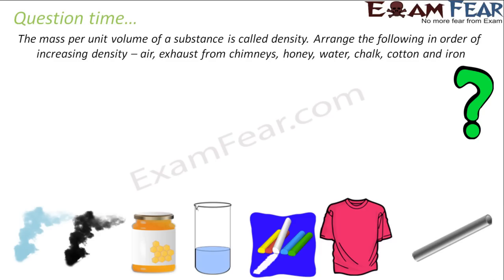The question says the mass per unit volume of a substance is called density. Density is denoted by delta and is mass per unit volume.